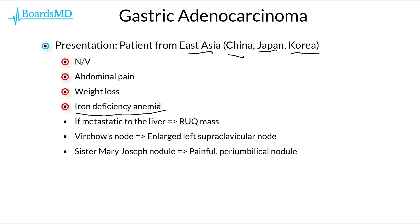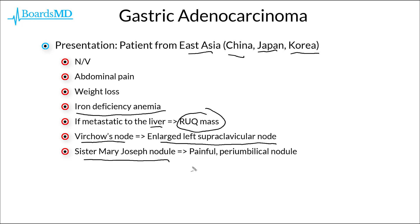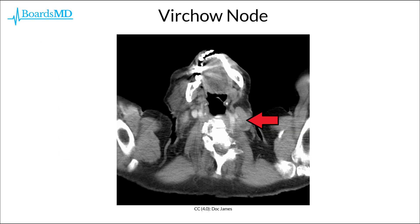There are several key findings we may see on physical exam depending on metastases from a gastric adenocarcinoma. In the case of a metastasis to the liver, the patient may present with a right upper quadrant mass. Examiners also frequently test you on Virchow's node, which is an enlarged left supraclavicular node, and we should also remember Sister Mary Joseph nodules, which present as a painful peri-umbilical nodule. The enlarged left supraclavicular node is a classic sign of metastasis from a gastric adenocarcinoma.